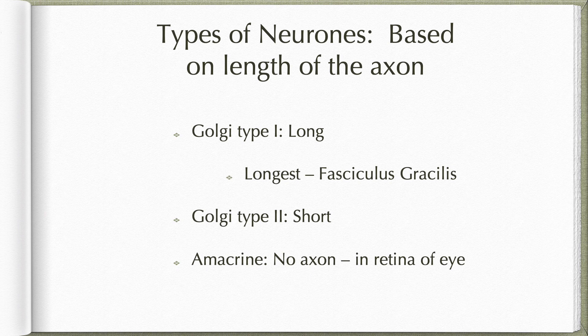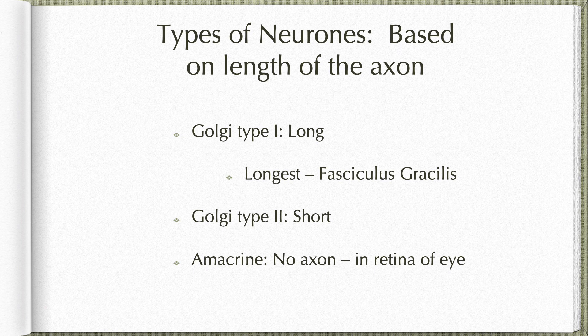Among Golgi type 1 neurons, the longest cells are those belonging to the fasciculus gracilis. Although the neuronal cell bodies are present in the lower part of the spinal cord, one process reaches the tip of the toes. The cell bodies are in the S1, S2, S3 sensory ganglia and the other process reaches the medulla. So in a person of about six feet in height, this cell spans the whole length of six feet from the tip of the toe all the way to the medulla oblongata.